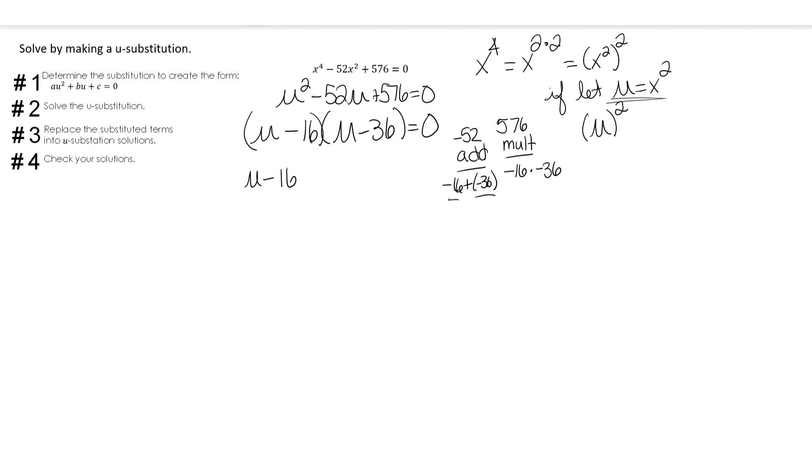Now we need to solve using the u, so we have u minus 16 equals 0, u minus 36 equals 0. I'm going to add 16, so u equals 16. I'm going to add 36, so u equals 36.